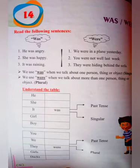Now understand the table and you will easily understand. We will use 'was' with he, she, it, girl, or boy.